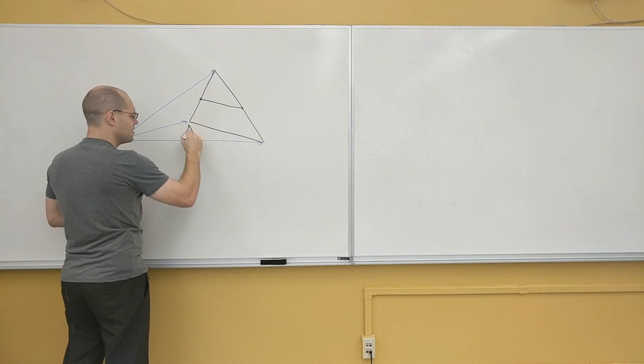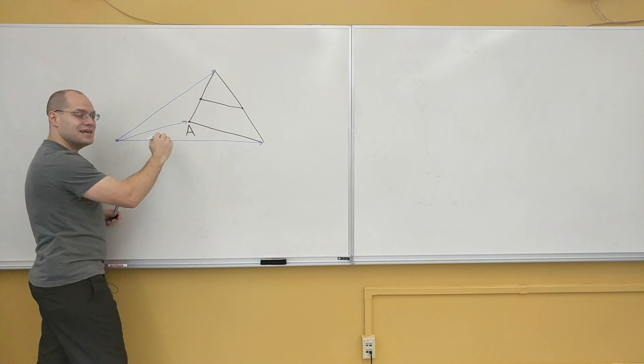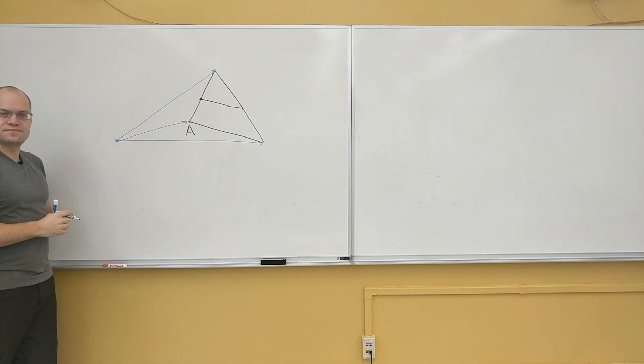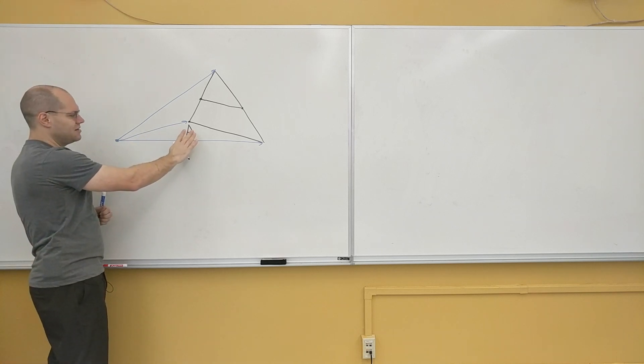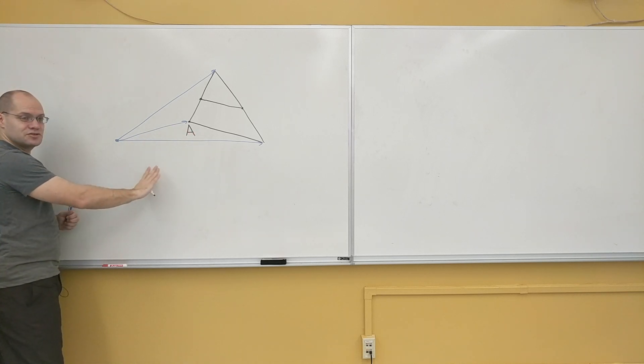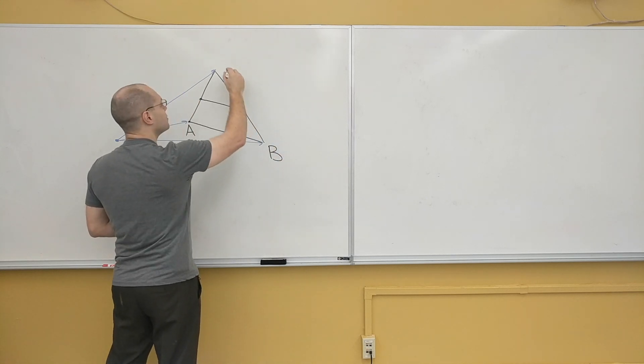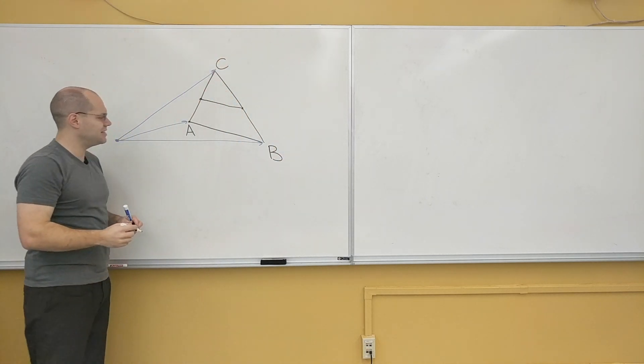A, so you can think of it as A the point, but also A vector. Here I'll leave it as A the point, but then when I do my algebra I'll do A vector. B, as we like going in counterclockwise direction, and C.